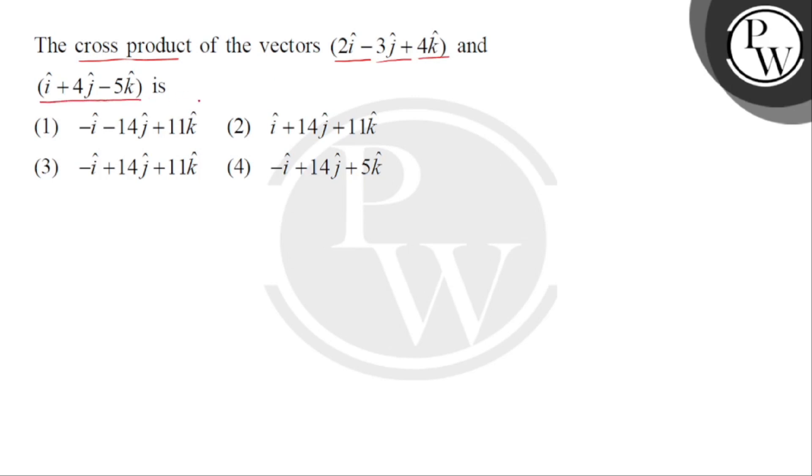So given है हमें a vector. इस vector को मान लेते हैं a vector. This is equal to 2i cap minus 3j cap plus 4k cap and another vector.